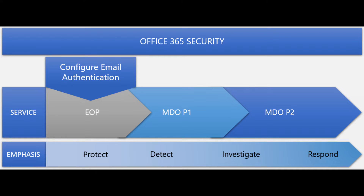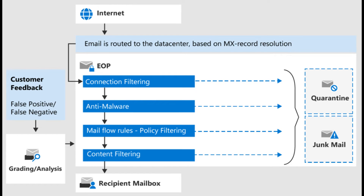The first step in Exchange Online Protection is configuring email authentication — that is SPF, DKIM, and DMARC — which I will show you in my next video. As shown in this diagram, when an incoming message enters Exchange Online Protection, it initially passes through connection filtering, which checks the sender's reputation. The majority of spam is stopped and rejected at this point.